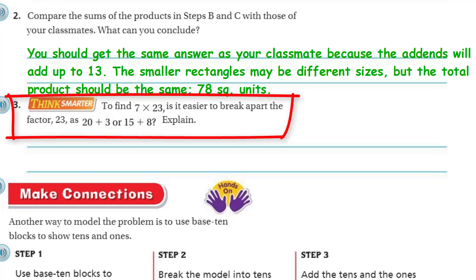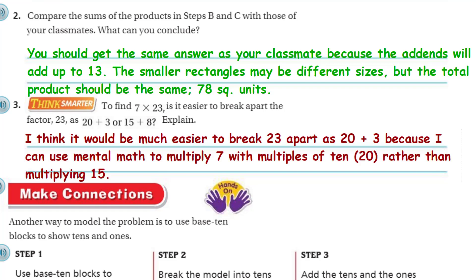Now it says, think smarter. To find 7 times 23, is it easier to break apart the factor 23 as 20 plus 3 or 15 plus 8? Explain. Well, I would say it would be easier to break apart 23 as 20 plus 3 because it would be easier to multiply because I can just do multiples of 10. And then 20 plus 3, it would be easier to do it that way. So I think it would be much easier to break 23 apart as 20 plus 3 because I can use mental math to multiply 7 with multiples of 10, which is your 20, rather than trying to multiply it with 15.